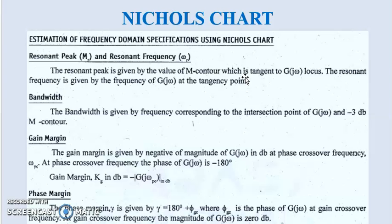The Resonant Peak M_R is given by 1 / (2ζ √(1 − ζ²)), and omega_r is given by ω_n √(1 − 2ζ²), where ζ is the damping ratio and ω_n is the natural frequency. The Resonant Peak is given by the value of the M contour which is tangent to the G(jω) locus, and the Resonant Frequency is given by the frequency of G(jω) at the tangency point.